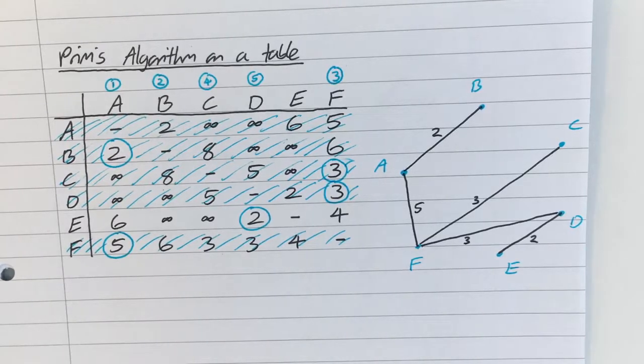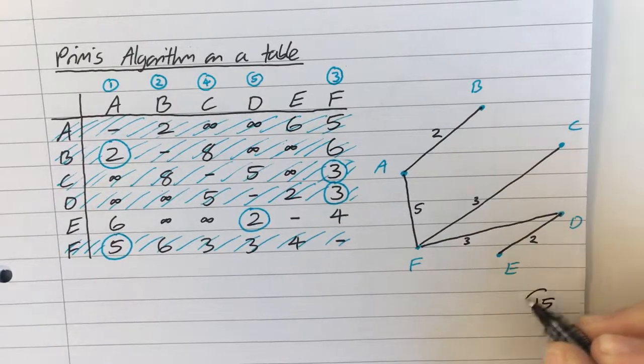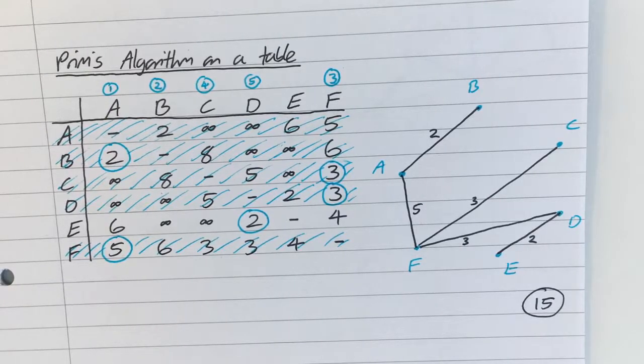Total distance, 15. And that's Prim's on a table.